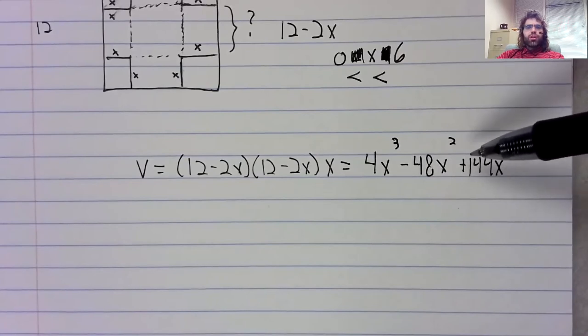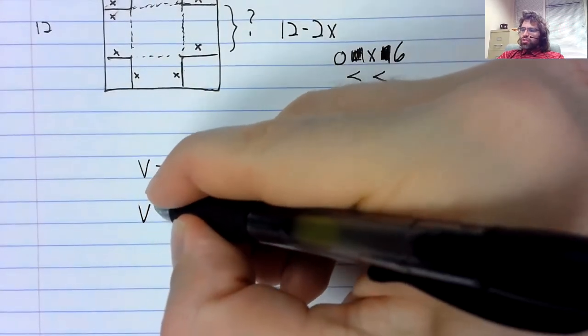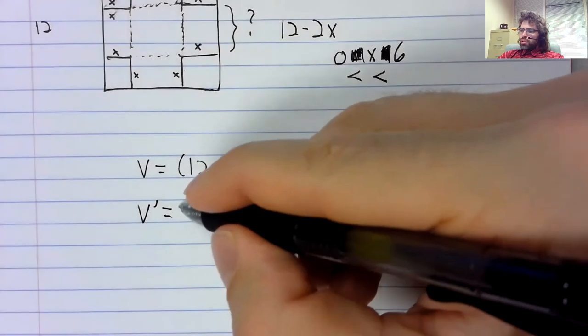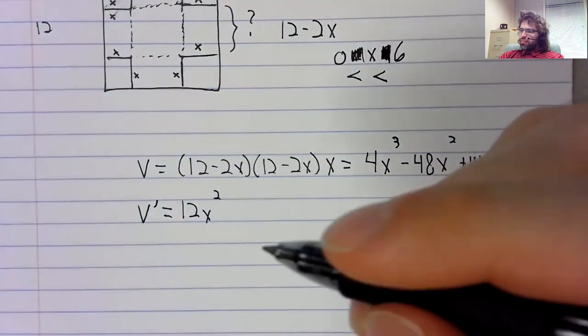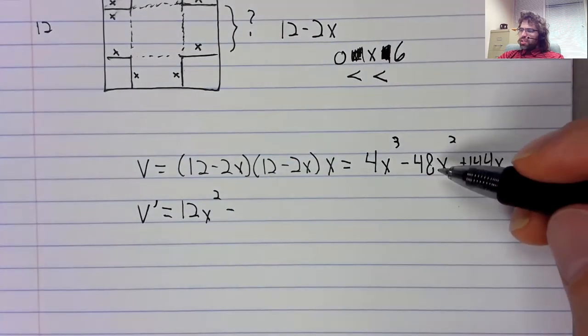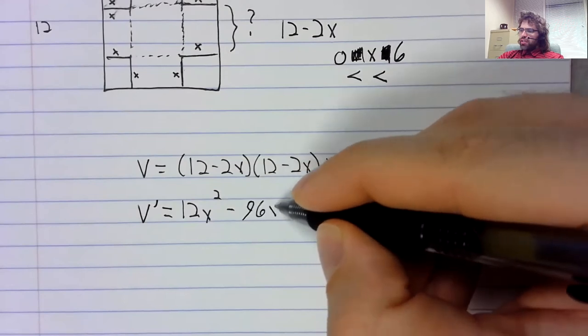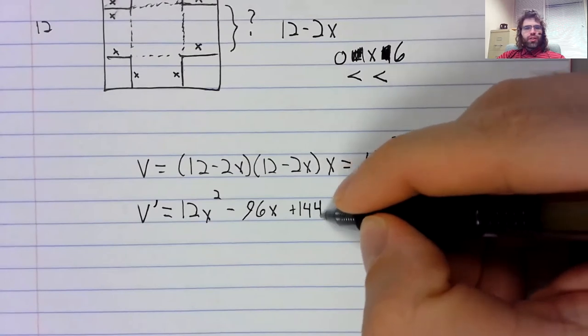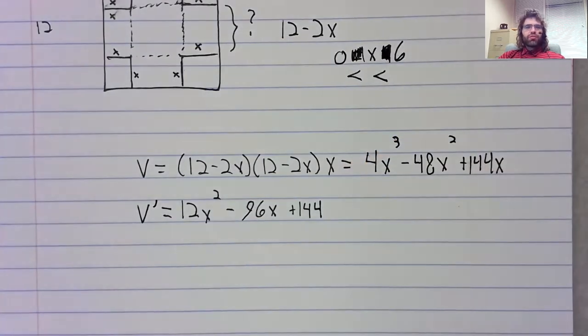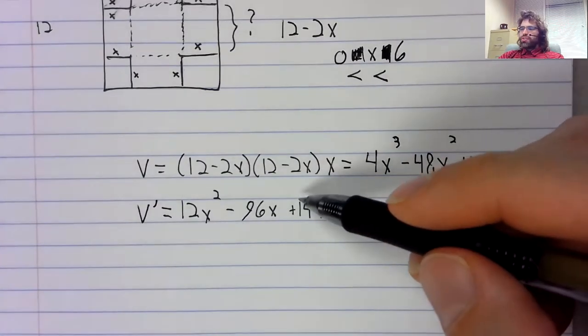Now, good news, bad news. The good news is, this is just a polynomial. Its derivative should be easy to take. Just watch me make some elementary error after saying that. But no, this is all correct.